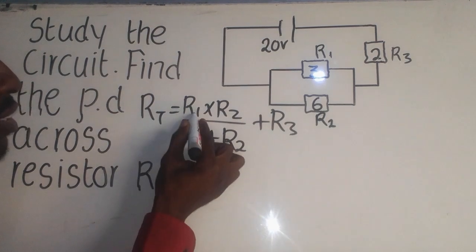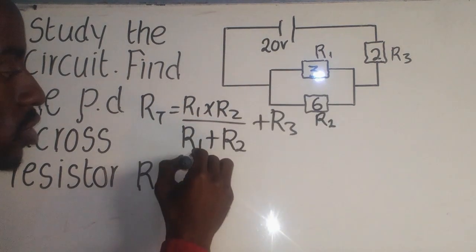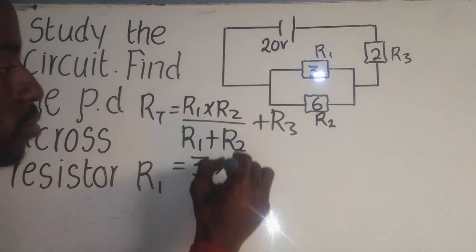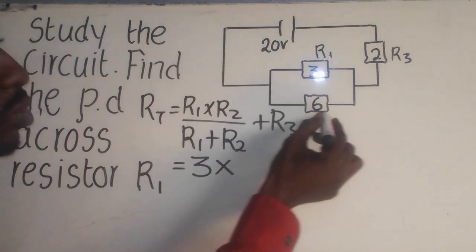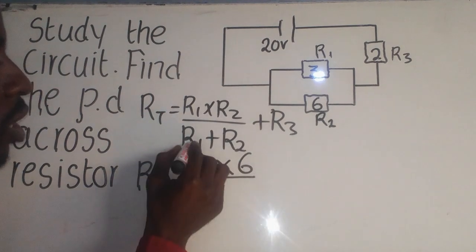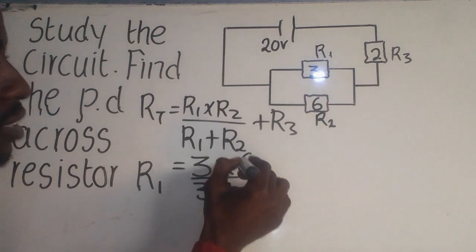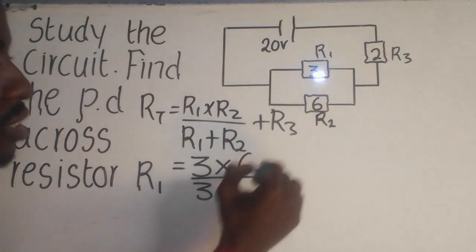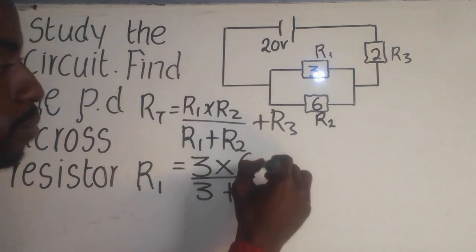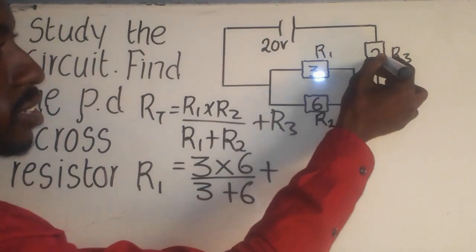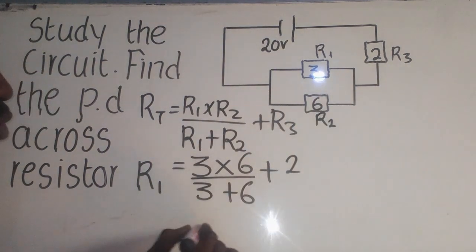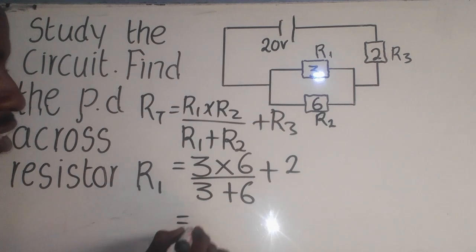We say equal. What is R1? It is 3, you put 3, times. What is R2? R2 it is 6, you put 6 over. What is R3? It is 2, you put 2. Now, from here, you know it will be like this.